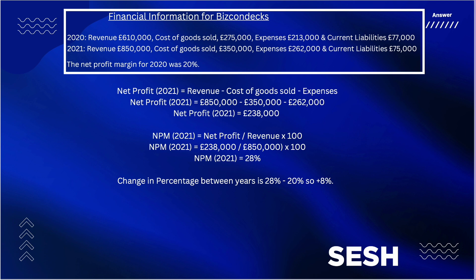First, we need to calculate the net profit before we calculate the net profit margin, or NPM. Net profit margin for 2021: you need to do revenue minus cost of goods sold minus expenses. So the net profit for 2021 is £850,000 minus £350,000 minus £262,000, and that comes to £238,000 net profit.